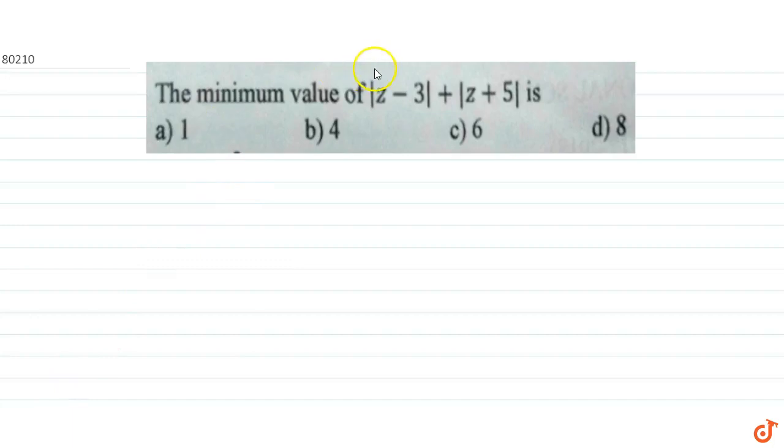In this question, we have to find the minimum value for mod of z minus 3 plus mod of z plus 5. Now, using the triangular inequality, we get mod of z1 plus z2 is less than or equals to mod z1 plus mod of z2.